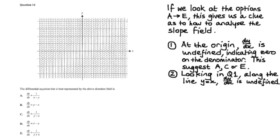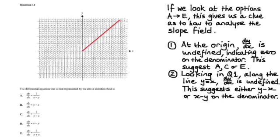Now if we look in quadrant 1, this is very interesting. If we look along the line Y equals X, you'll notice that dy, dx is also undefined. And by the way, this also applies to quadrant 3. But I'm just looking in quadrant 1 so I don't get myself too confused. And the plot thickens even more. So this particular bit of information suggests that either Y minus X or X minus Y would be on the denominator.